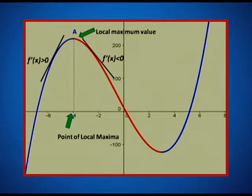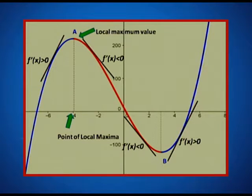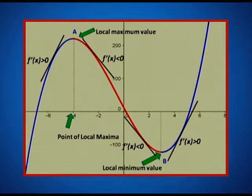Similarly, looking at the value in this graph at x equal to 3: if we look at point B and observe the slope of the tangent, then for values less than B, the value of f'(x) is negative; for values greater than B, the value of f'(x) is positive. That again indicates and confirms what we saw earlier — that at B the derivative must be 0. Then B is the point of interest to us. At B, the local minimum value is attained, and x equal to 3 becomes the point of local minima.